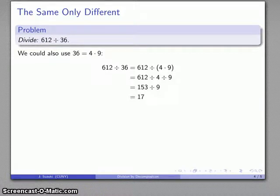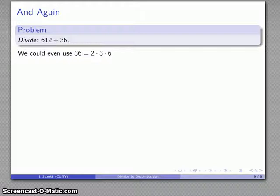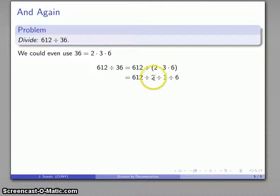Again, one of the features of this is you get to pick how you're going to decompose the divisor. If you don't want to work with 4 and 9, maybe you could split that 36 up into even smaller pieces. 36 is 6 times 6, and I'll break that 6 into 2 times 3, so 36 is 2 times 3 times 6. So if I wanted to do this division by 36, I could divide by 2, then by 3, then by 6.